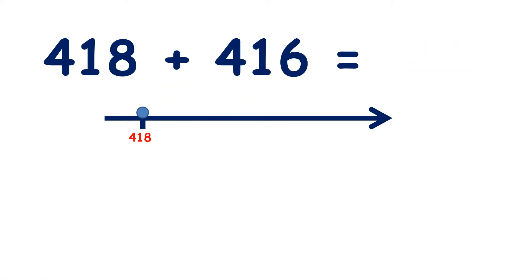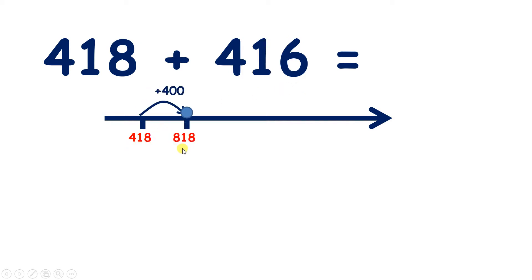Now we have four hundred and eighteen plus four hundred and sixteen. So we need to add four hundreds, one ten, and six units. If we add four hundreds, that takes us to eight hundred and eighteen, because four plus four is eight.